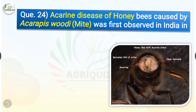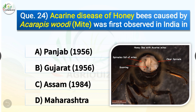Question number twenty-four: Acarine disease of honeybees caused by Acarapis woodi mite was first observed in India in which location and year? The options are: Punjab in 1956, Gujarat in 1956, Assam in 1984, or Maharashtra in 1953. The correct answer is option A — Punjab in 1956. Acarine disease of honeybees caused by Acarapis woodi was first observed in India in Punjab in the year 1956.